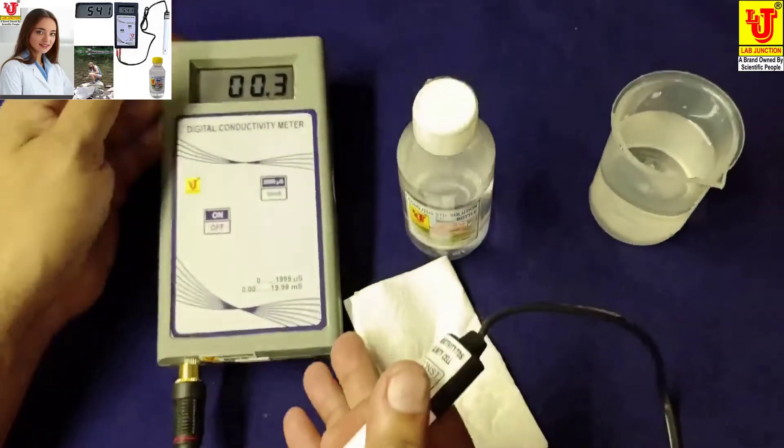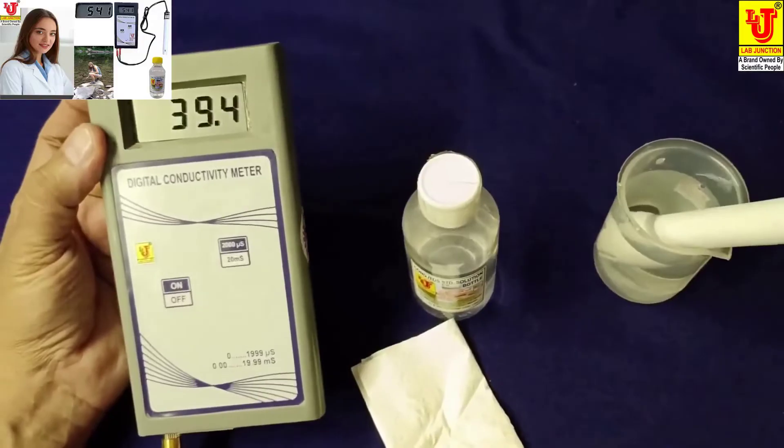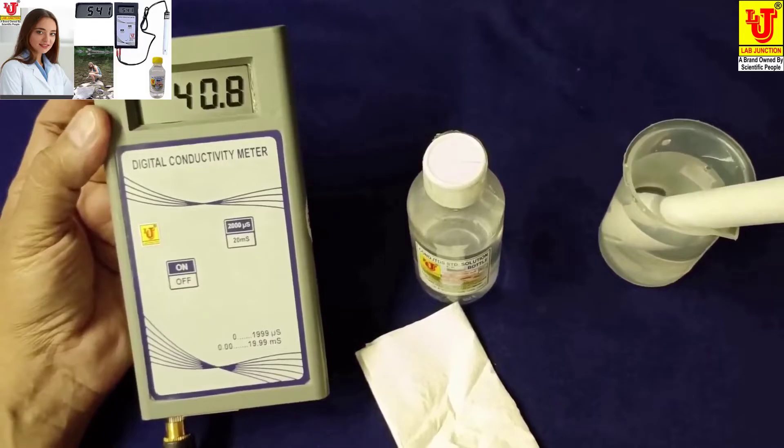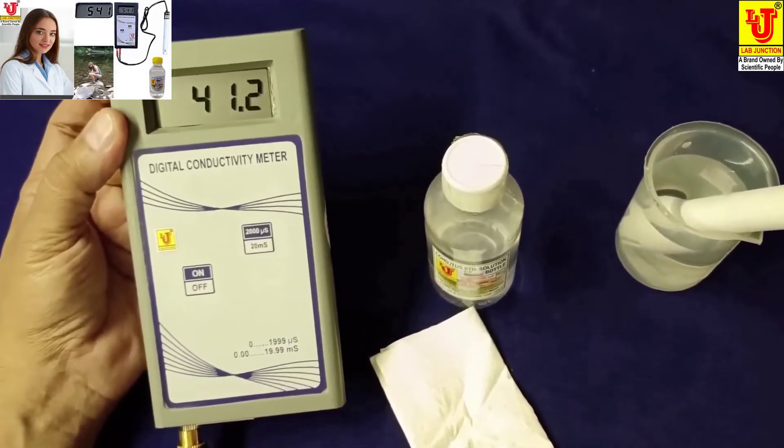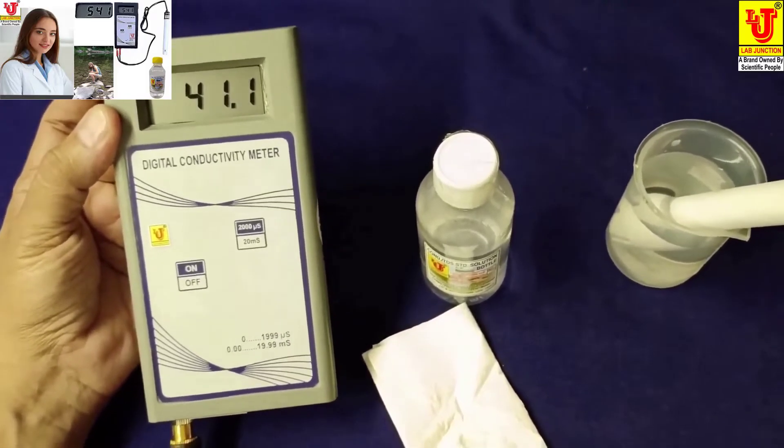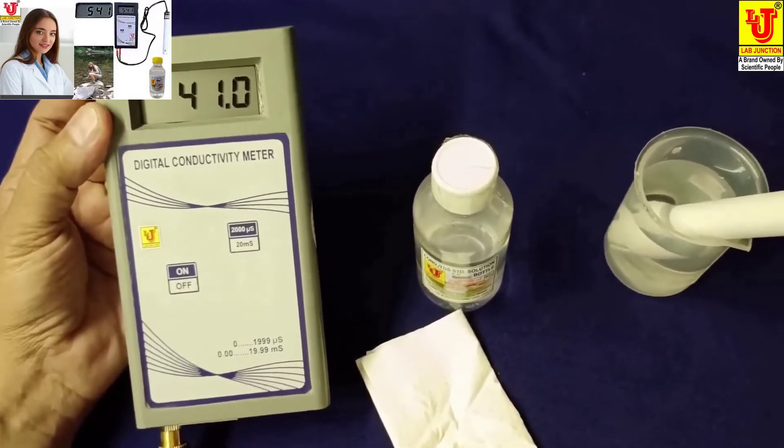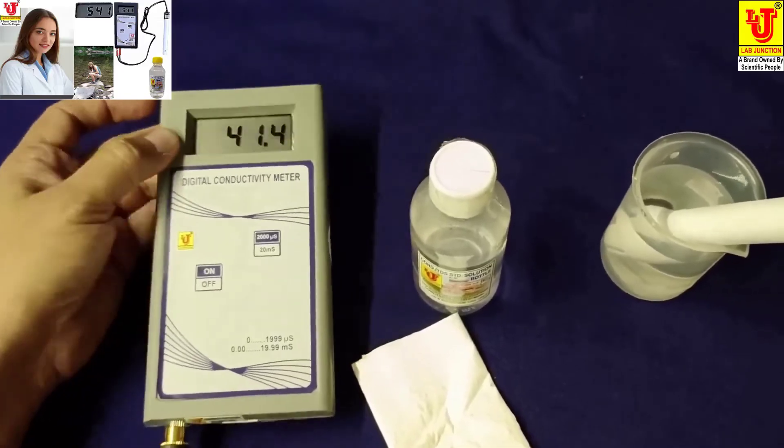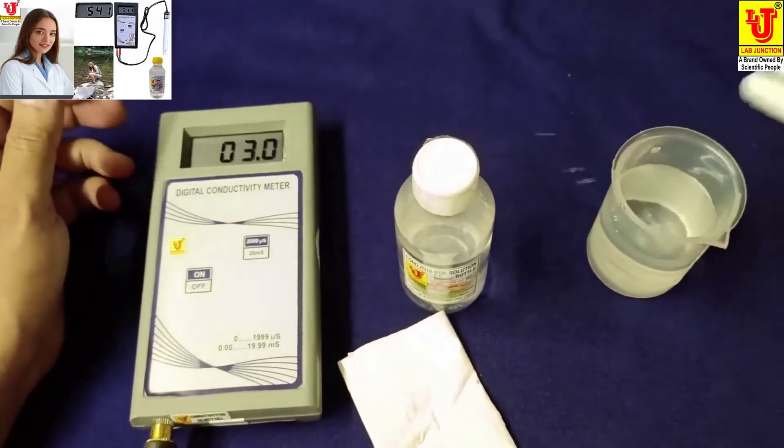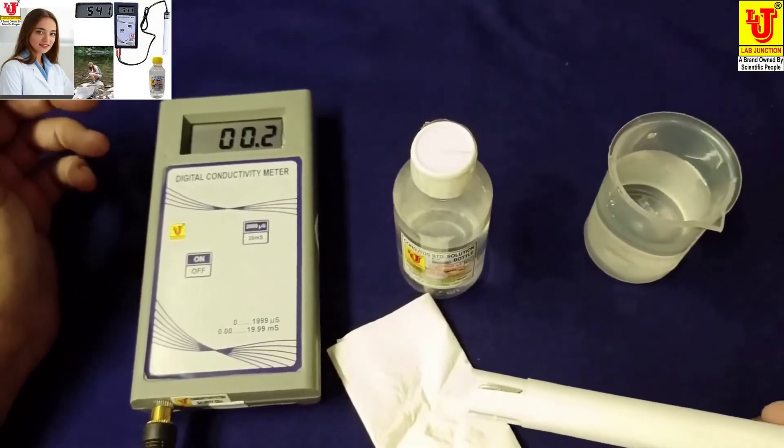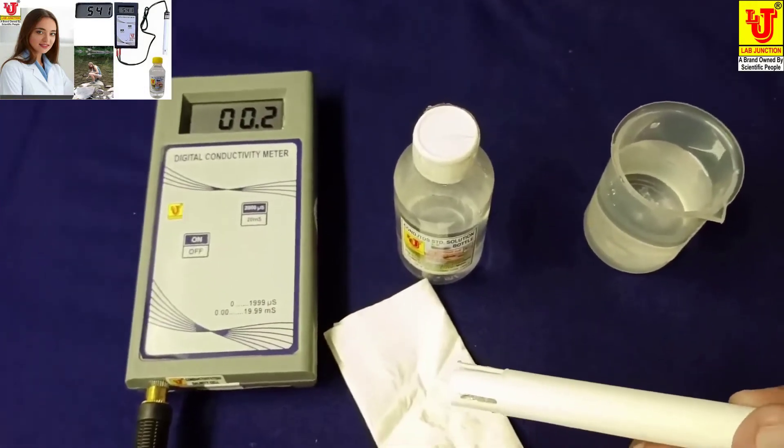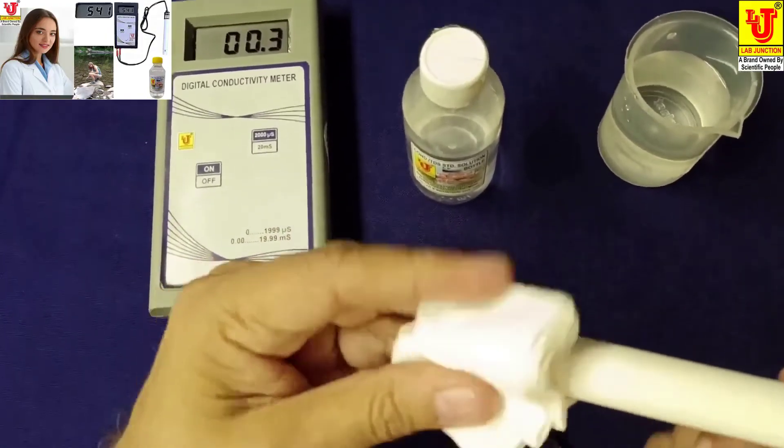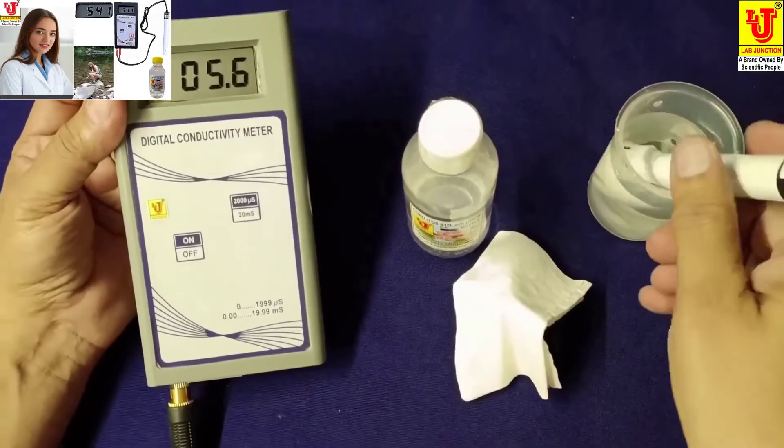And directly dip in another sample. For better precautions first you have to wash conductivity cell with distilled water, then refresh with tissue paper and dip in another sample. For better results please take this precaution to maintain better results.